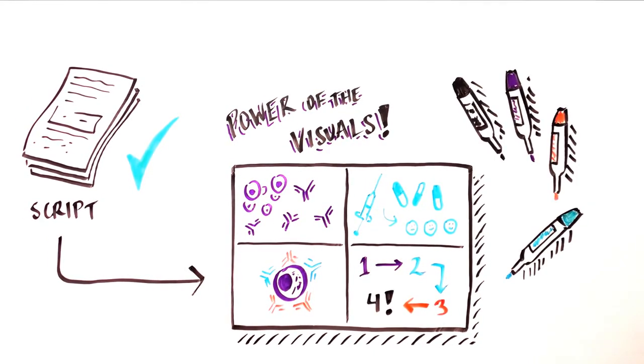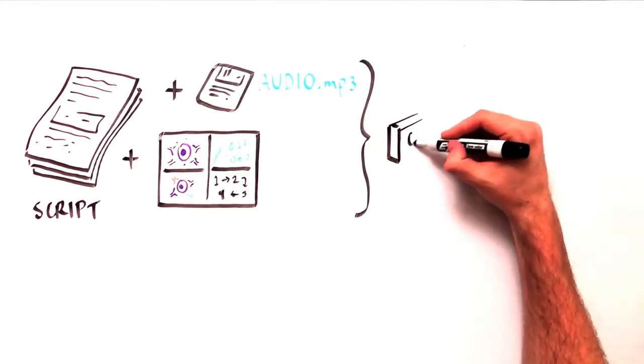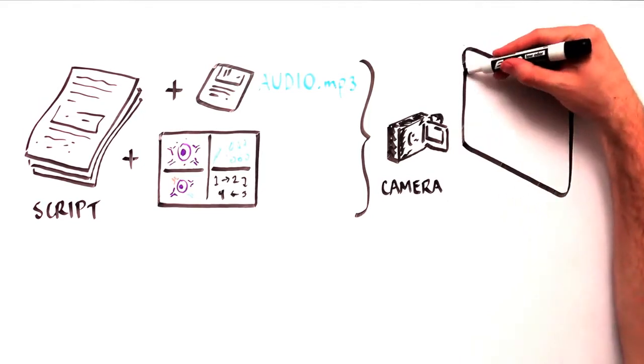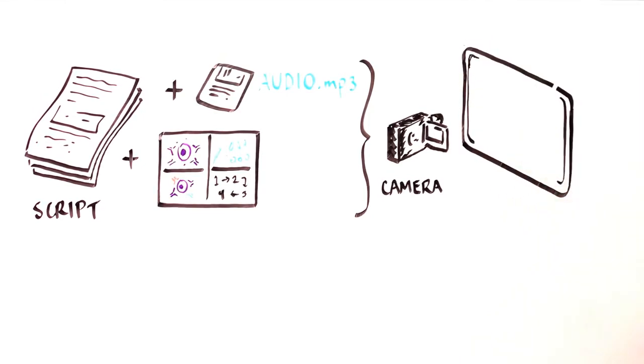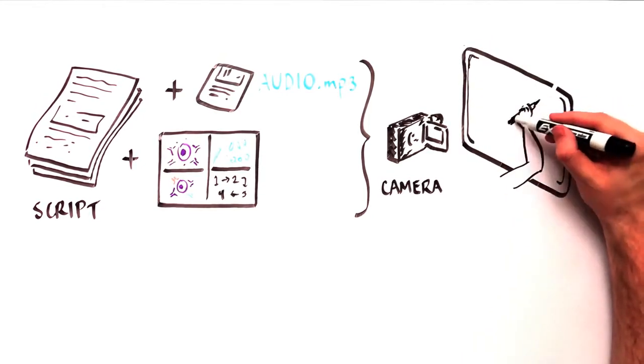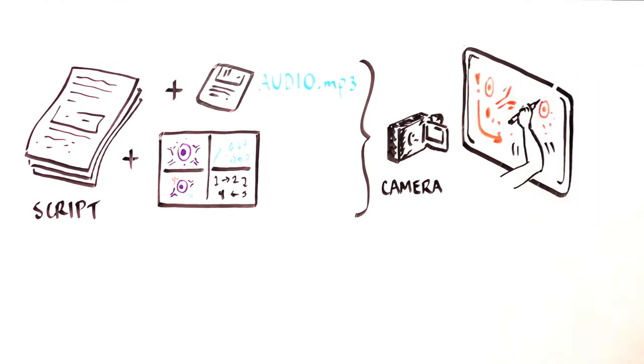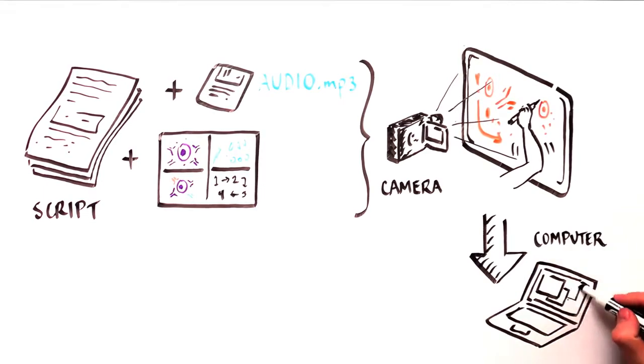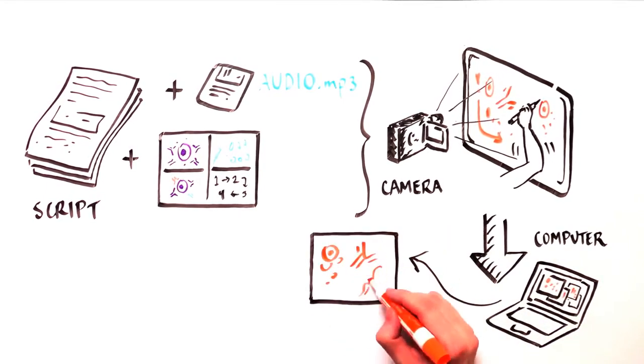Once the script and storyboard have been reviewed and refined, it's time to film. Using a camcorder, the storyboards can be reproduced in detail on the whiteboard at regular speed. Later on, the video footage can be sped up several hundredfold and edited to be in sync with the corresponding narrative using video editing software.